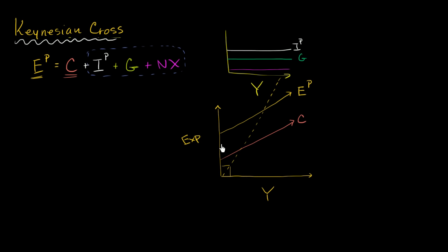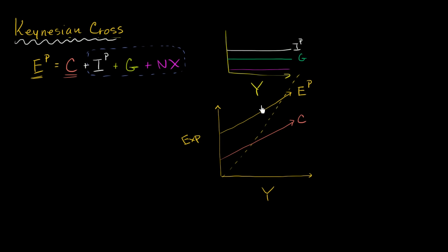This is where the name Keynesian cross comes from: you have the aggregate planned expenditures line crossing the equilibrium line — all the points where income equals expenditure. The actual equilibrium point of the economy is where aggregate planned expenditures intersects that 45-degree line. That's the equilibrium level of GDP, where expenditures are actually equal to output.